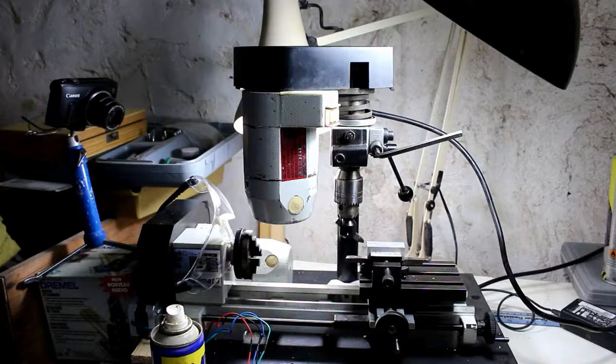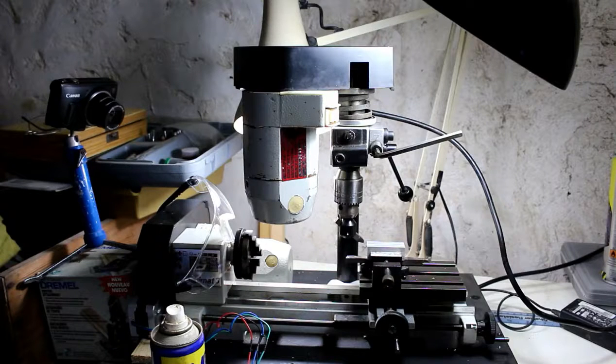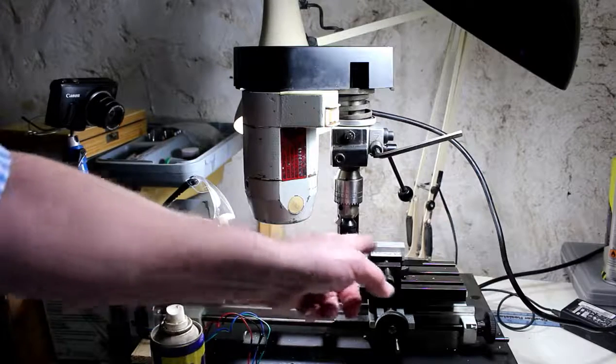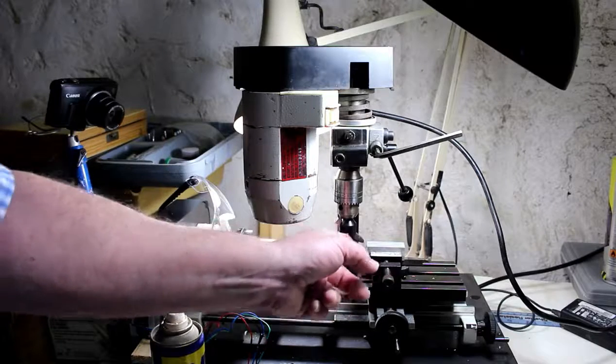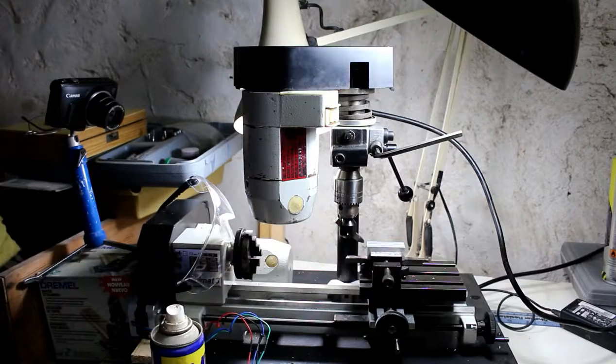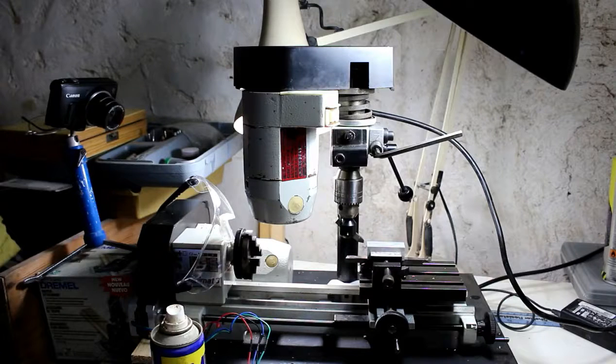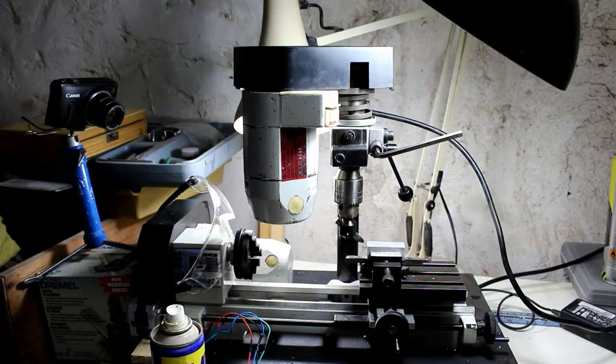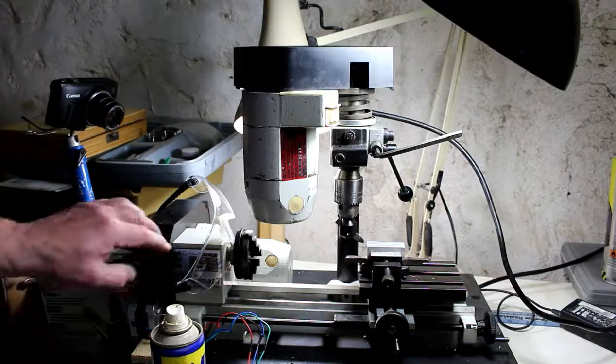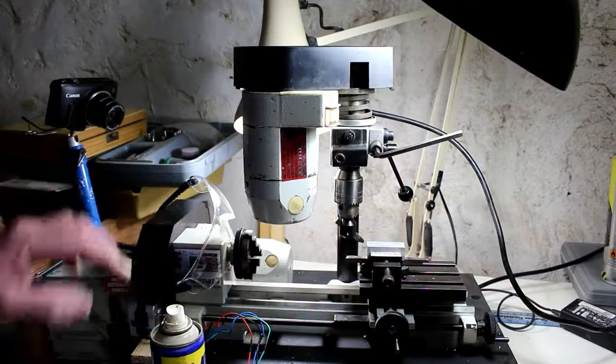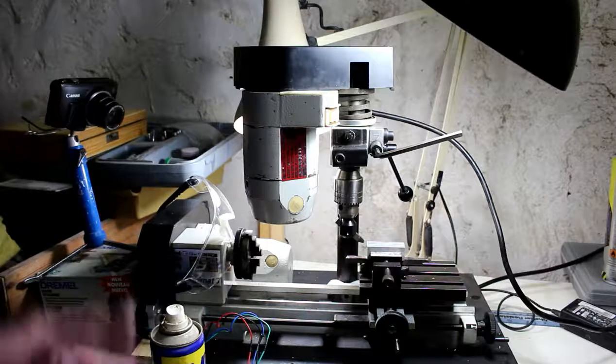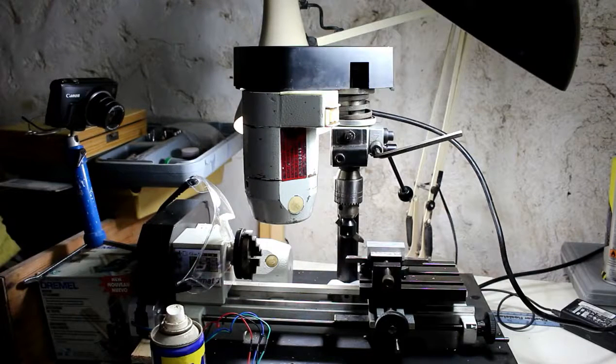So for example, if we said it was 200 feet per minute, the formula is four times the surface feet per minute divided by the diameter of the cutter. Now the diameter of this cutter is 1.5 inches, so if we say 4 times 200 divided by 1.5 gives us just over 530 RPM. I can do 560 on here, it's a little bit higher but that's as near as makes no difference.